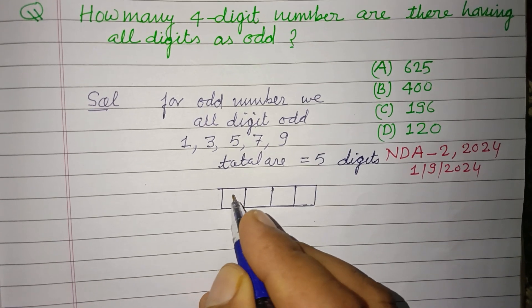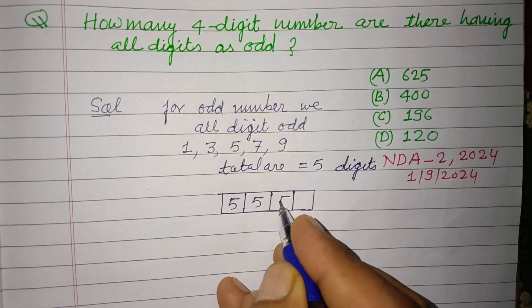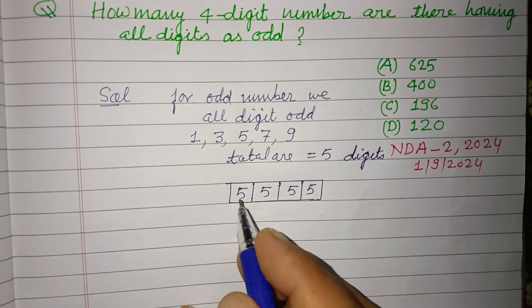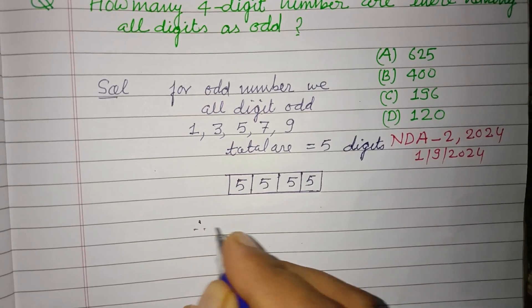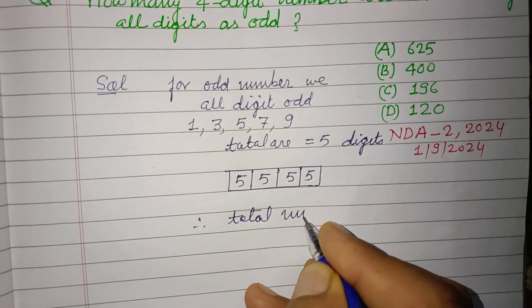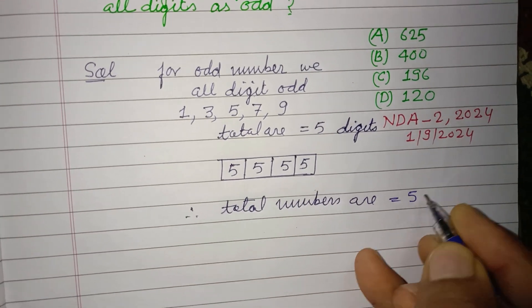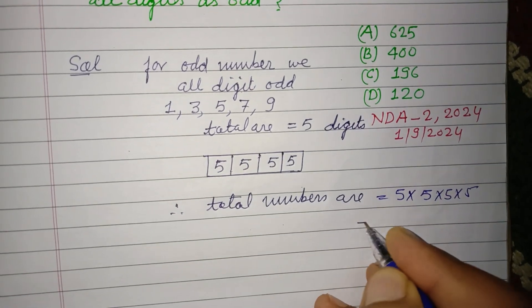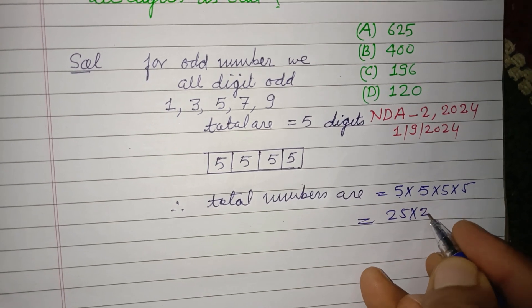So we can fill one number five times: 5, 5, 5, 5. So one number can be filled five times. Therefore, total numbers are 5 into 5 into 5 into 5. So 5×5 is 25, 5×5 is 25.